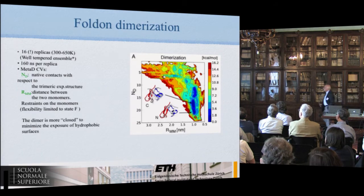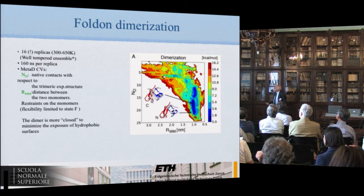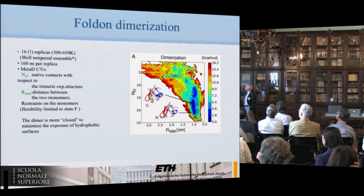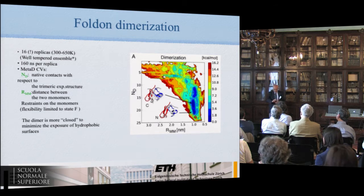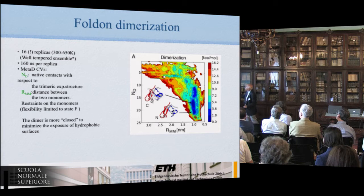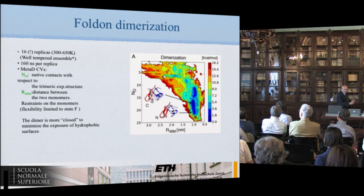Having done the monomer, we did the dimer, using a different collective variable. This is the free energy surface for the dimer. The dimer can be assembled into a parallel and anti-parallel arrangement, and actually the anti-parallel is slightly more favored. The parallel arrangement is what they have in the trimer.